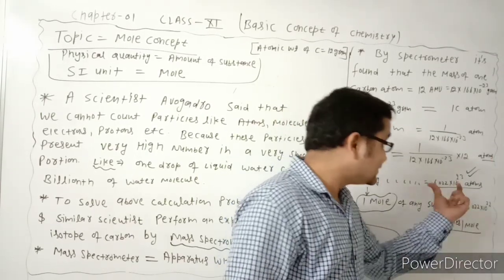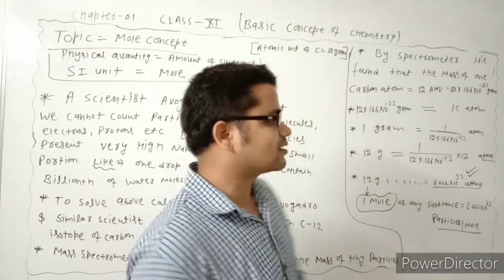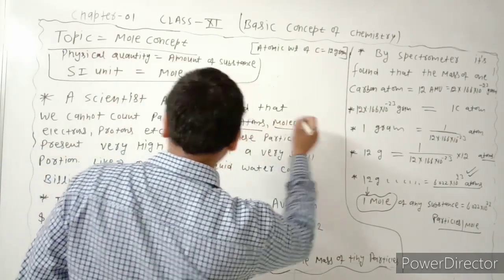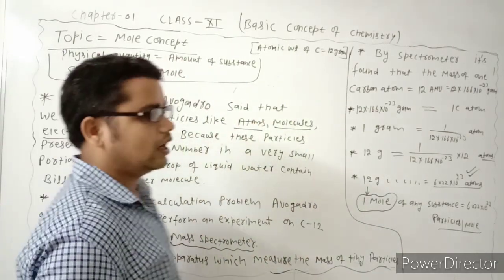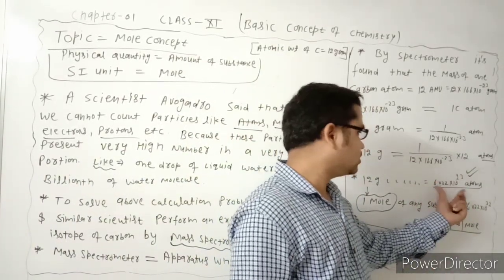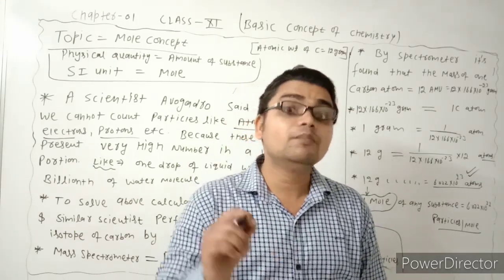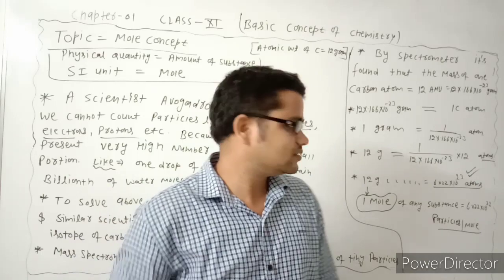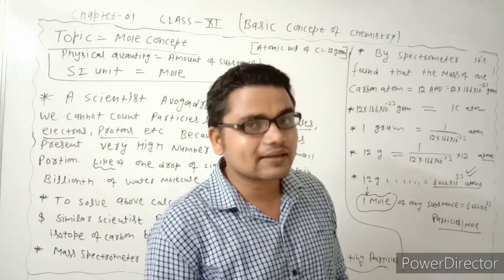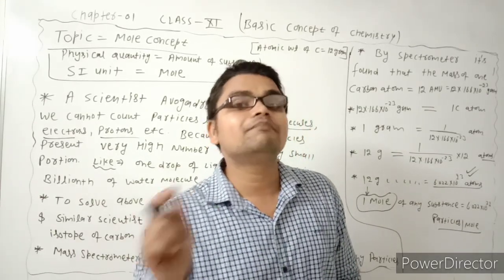One mole means a fixed number of particles — 6.022 × 10²³. If you have one mole of any substance, the number of particles is fixed. The particles can be atoms, molecules, electrons, or protons. The mass of one mole is the atomic weight in grams, which is the molar mass. The molar mass is the molecular mass expressed in grams.